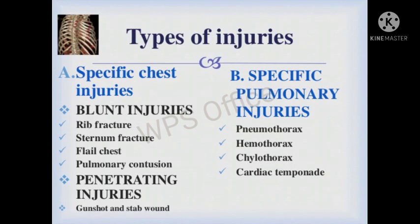There are different types: specific chest injuries and specific pulmonary injuries. In specific chest injuries we have blunt injuries and penetrating injuries. In specific pulmonary injuries we have pneumothorax, hemothorax, chylothorax, and cardiac tamponade. Today we will discuss blunt injuries and penetrating injuries. Under blunt injuries: rib fracture, sternum fracture, flail chest, and pulmonary contusion. Under penetrating injuries: gunshot wounds and stab wounds by a knife.